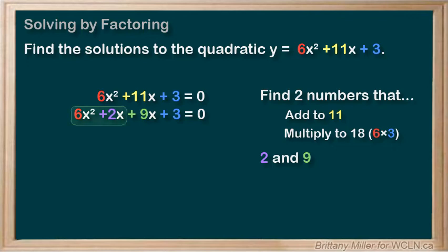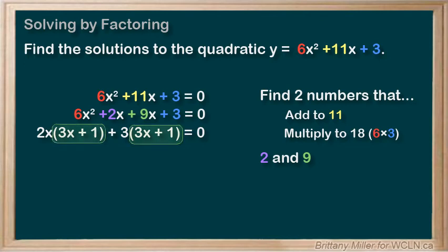We can take a 2x out of the first half and a 3 out of the second half, giving us 2x times 3x plus 1 plus 3 times 3x plus 1. Then we take the 3x plus 1 out front, leaving us with 3x plus 1 times 2x plus 3 equals 0.